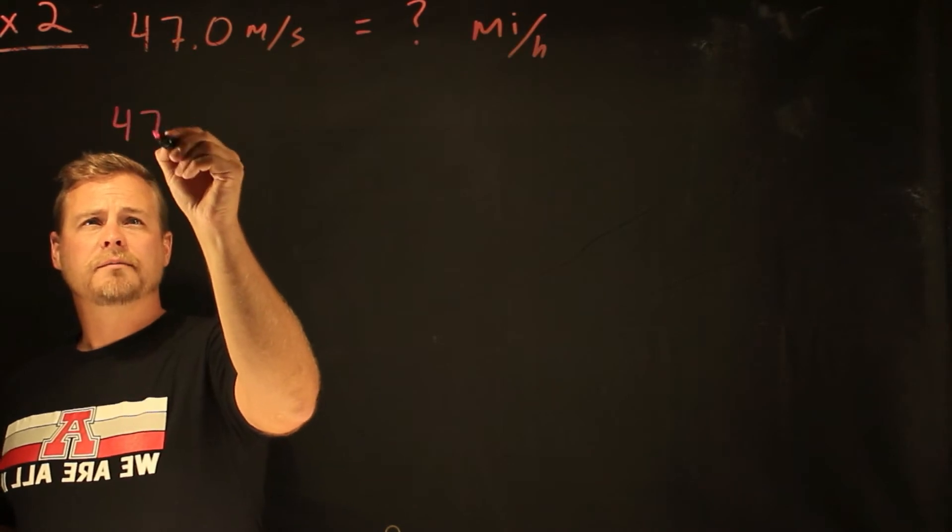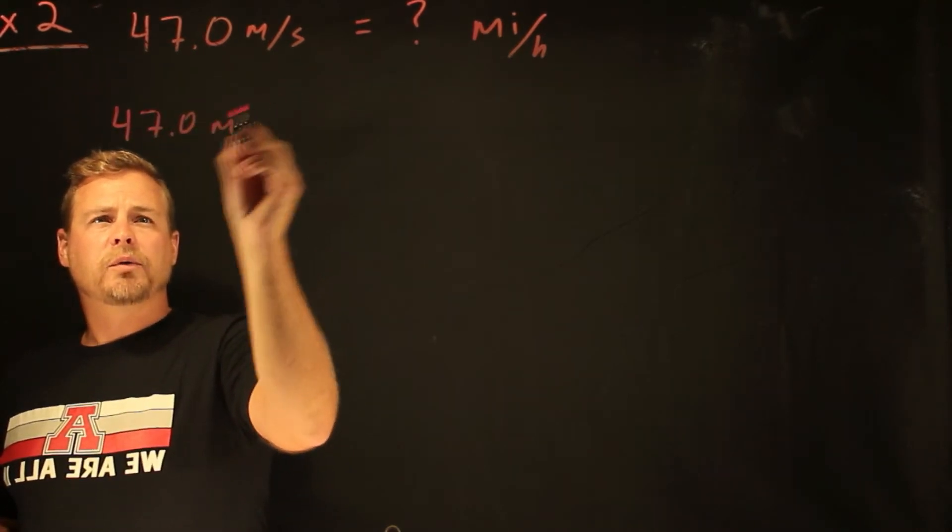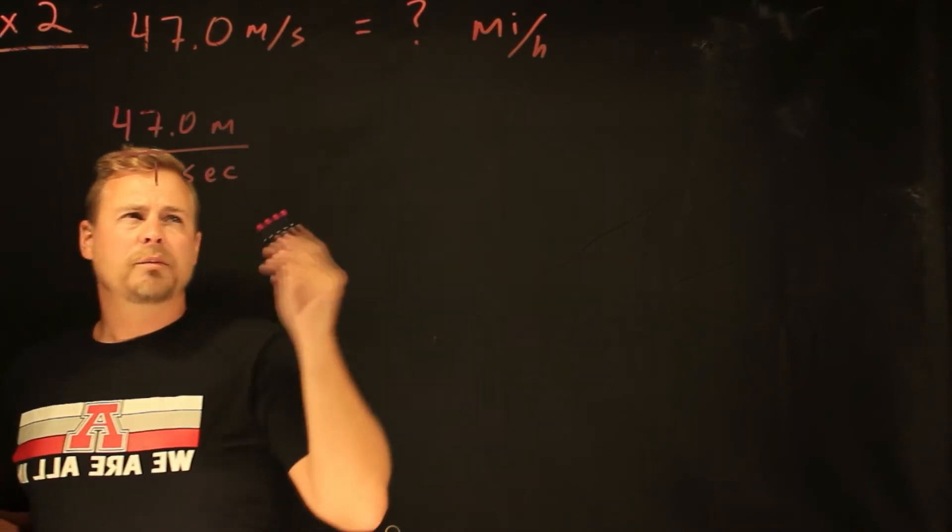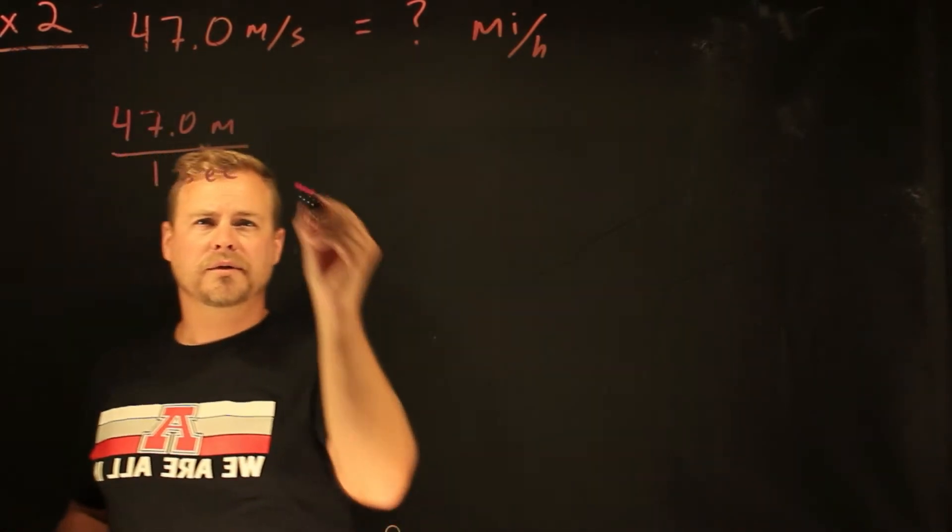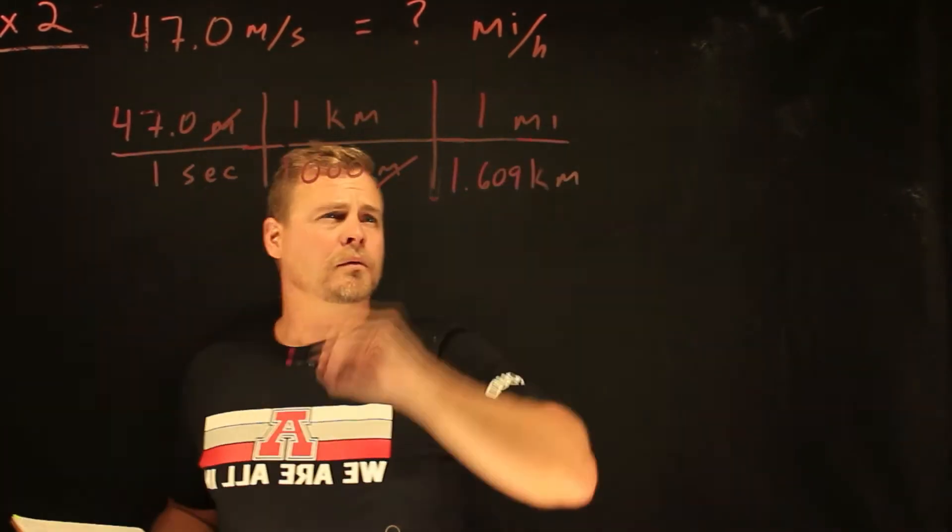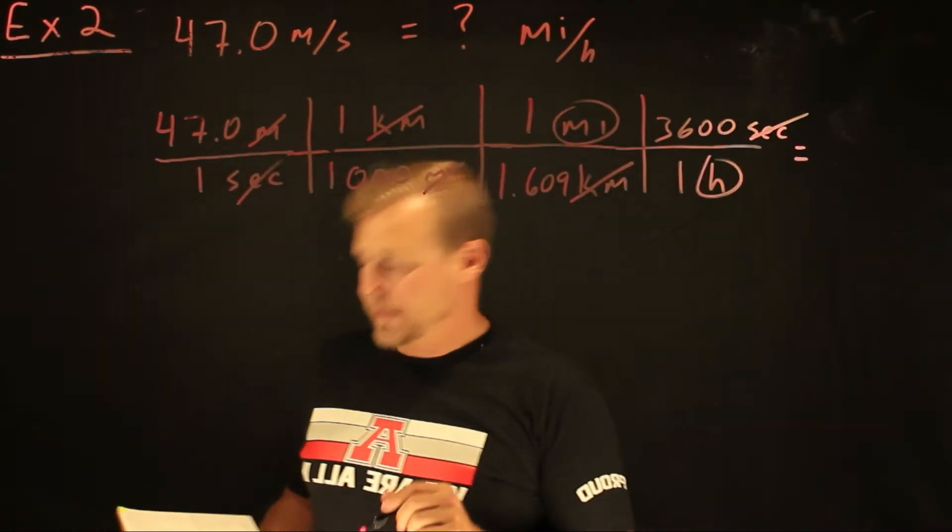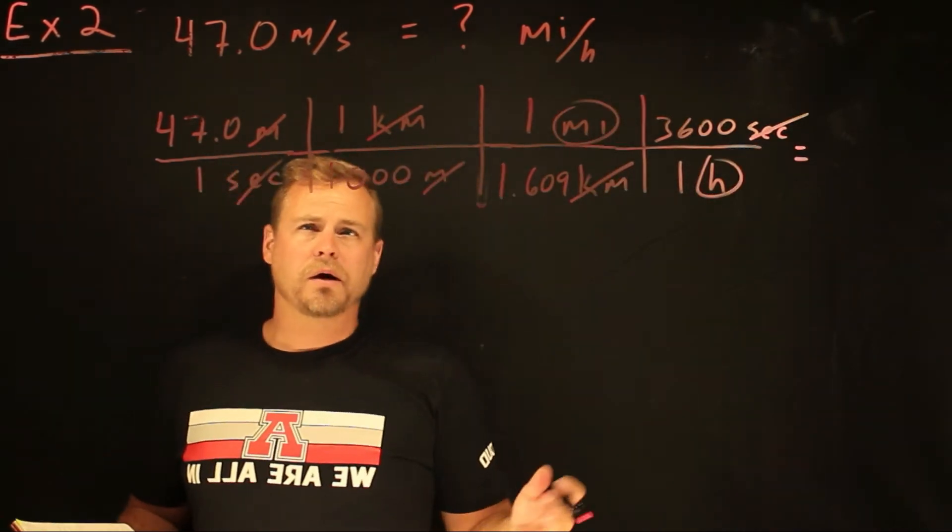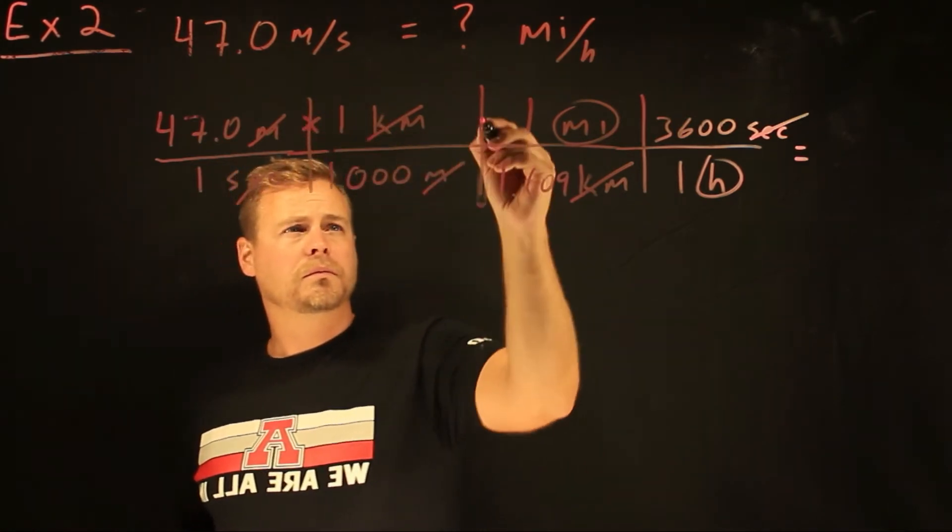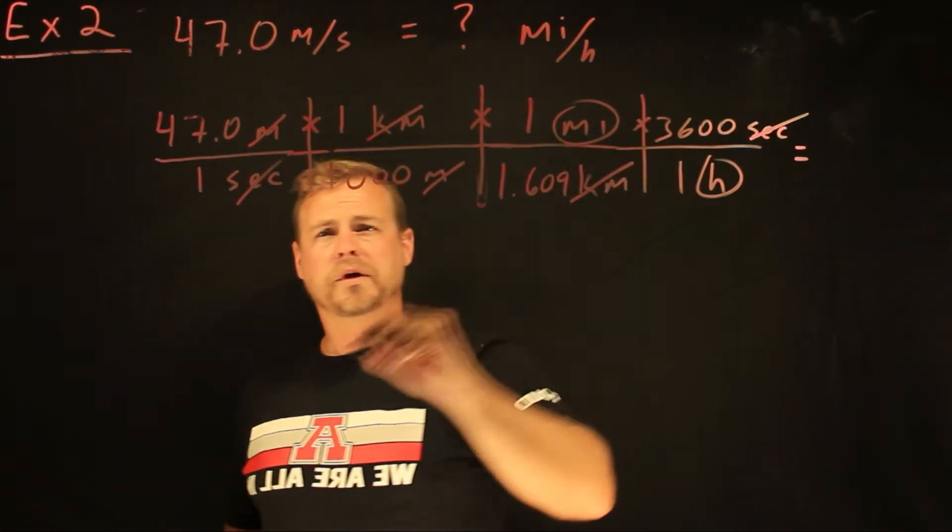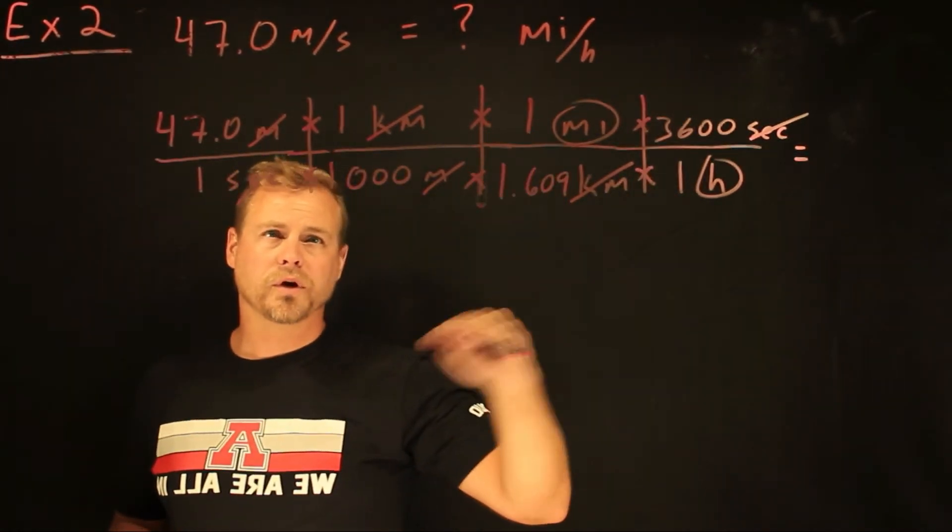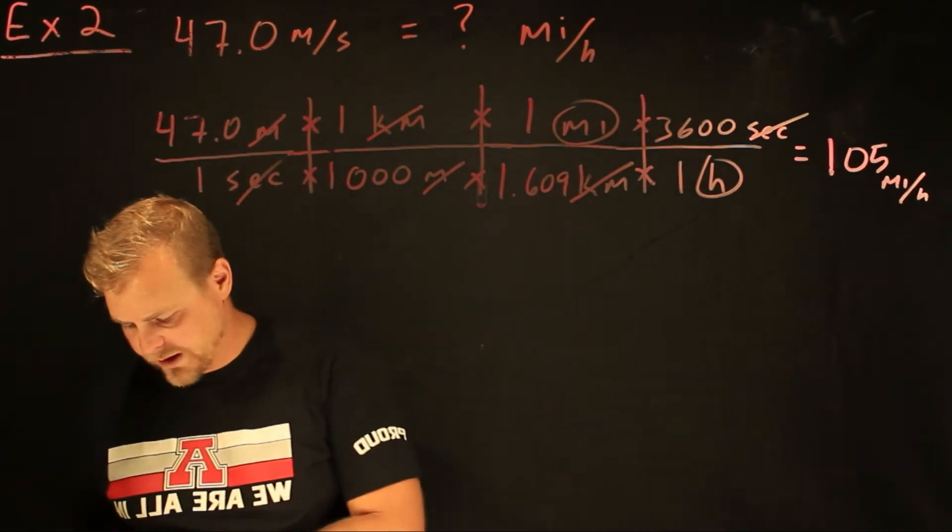So I started out with what I have, 47 meters. I'm going to write this a little bit differently in one second. That'll help me see the tops and the bottom. And we'll do train tracks this time. And then the only thing you have to do now is you're going to multiply across the top. So you're going to multiply across the bottom. And then you'll divide those two numbers. 105 miles per hour.